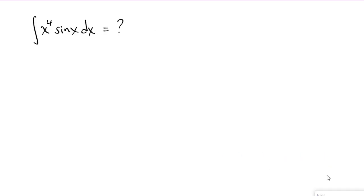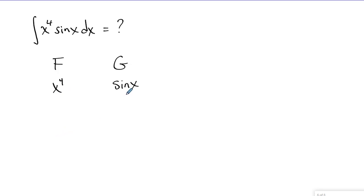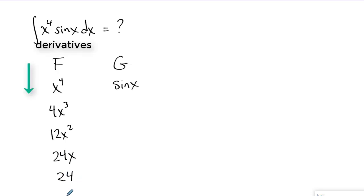Here's an example where integration by parts is required multiple times and the tabular method makes it much easier — otherwise with u's and v's you'd have iteration within iteration, which gets complicated. It's pretty clear what to choose: x to the fourth for derivatives since they'll get simpler, and sine x for antiderivatives since they just oscillate between sine and cosine and don't get worse. So the derivatives column gives 4x cubed, 12x squared, 24x, 24, and finally 0.